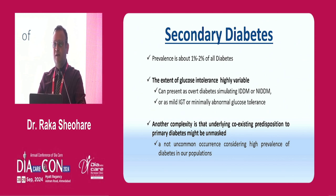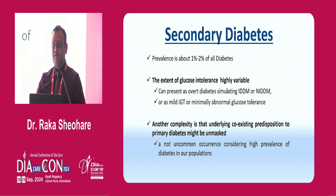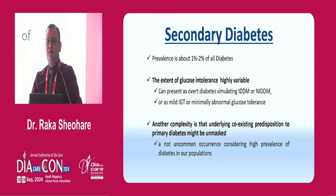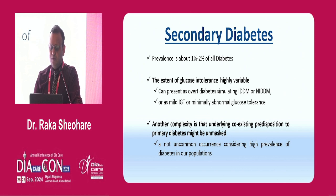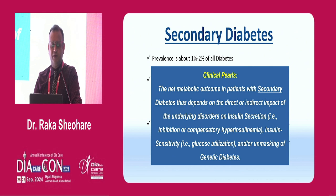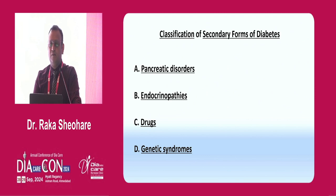Sometimes you can miss the cause. So secondary diabetes, with another complexity, this is endocrinopathy — whether it's pancreatitis or whether it's a genetic defect, you need to prove that difference. Otherwise you're not going to have proper management. Secondary diabetes depends on the direct or indirect impact of the underlying disorders on insulin secretion, sensitivity, or utilization.